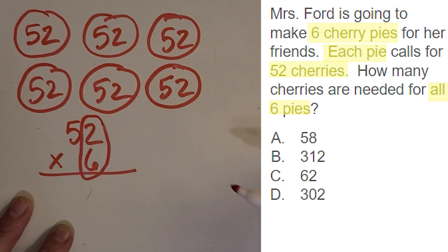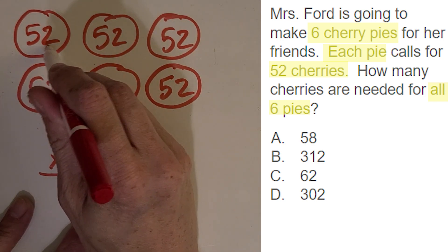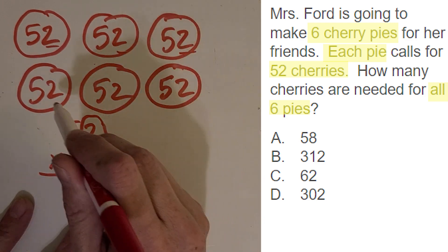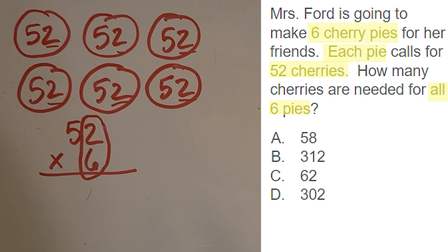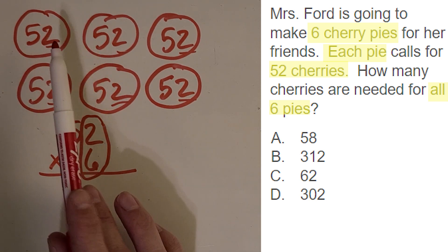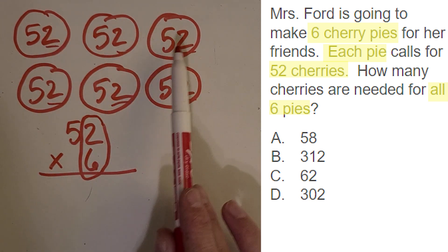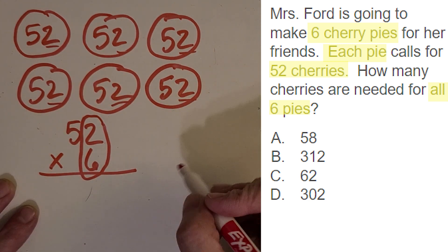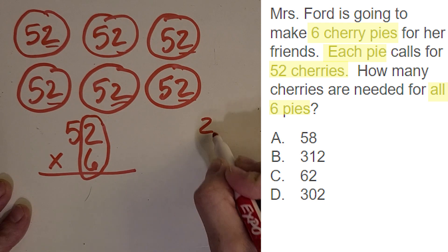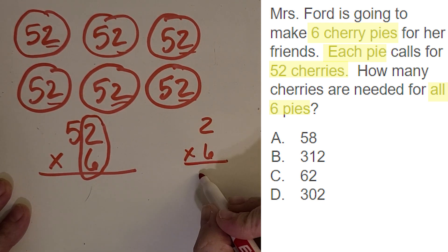As you can see up here, I see 6 groups of just the 2. So let's count that up. What is 6 times 2? I think you got it, 12. If you weren't quite sure, you could go 2, 4, 6, 8, 10, 12. Awesome. So 2 times 6 is 12.